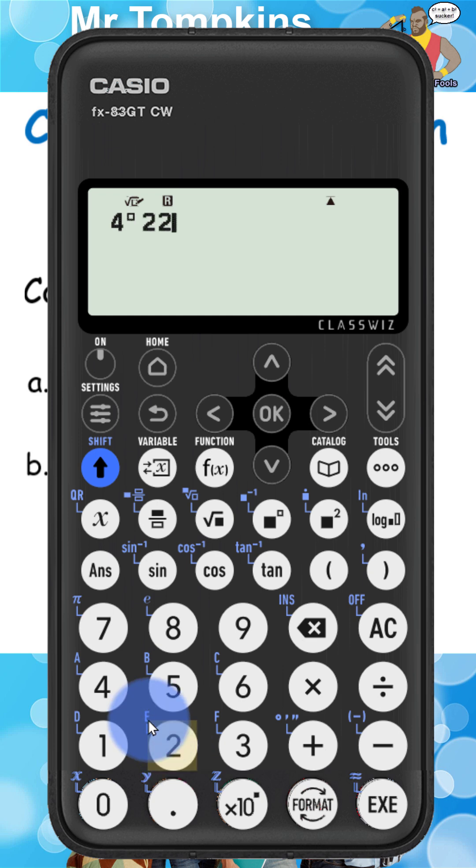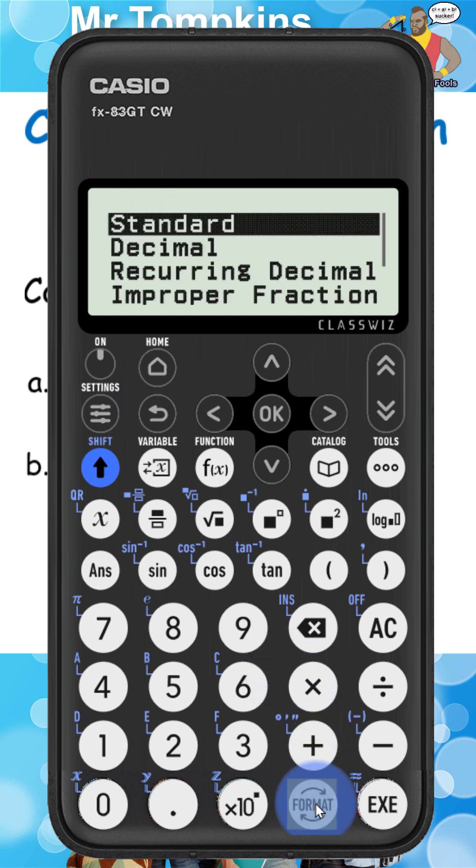And then if I type in the 22, I'm going to press the same thing, shift and then that plus key again. Pressing execute gives me 4 hours, 22 minutes and 0 seconds.